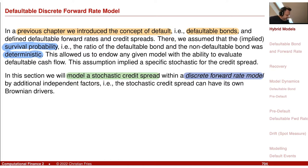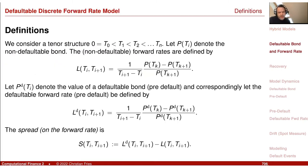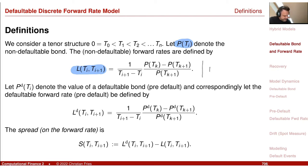Let us define the quantities. We have the non-defaultable bond, and from that we can define the forward rate or discrete forward rate. Note there is a typo — k should be equal to i. So it is the bond at the beginning of the period t_i minus the bond at the end of the period t_{i+1}, divided by the bond at the end of the period, divided by the period length.